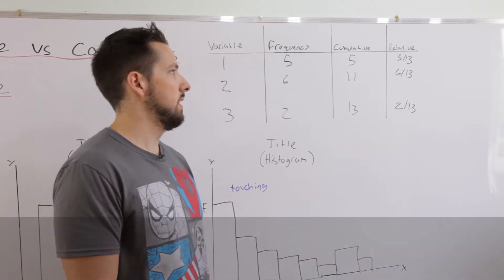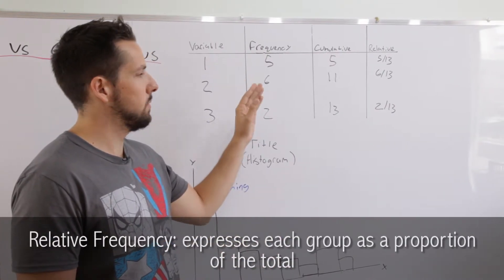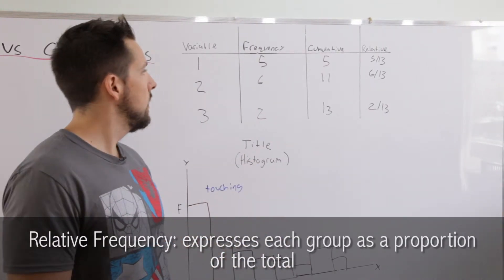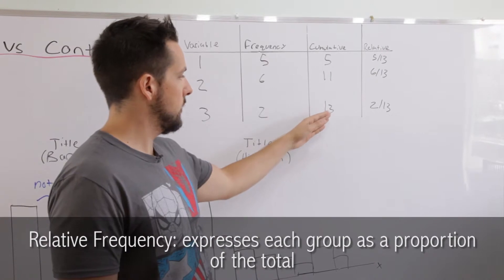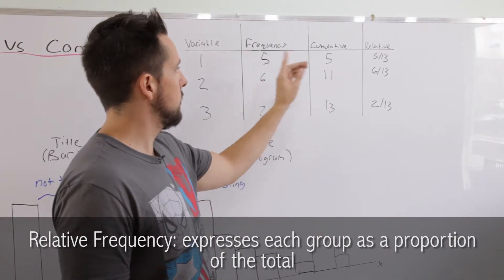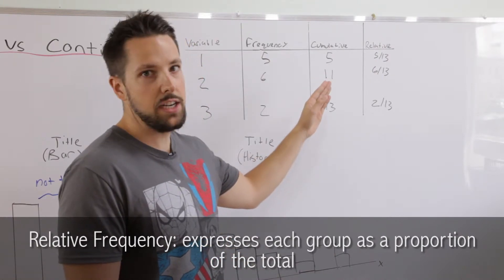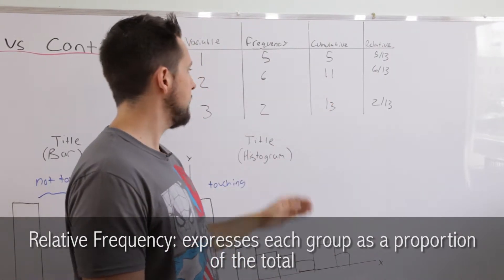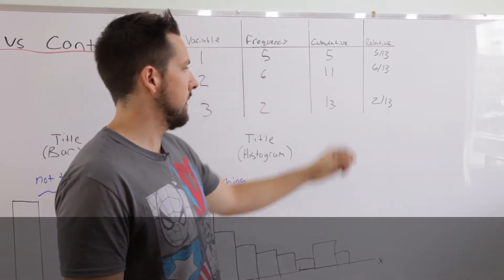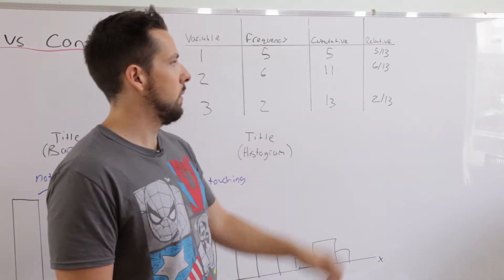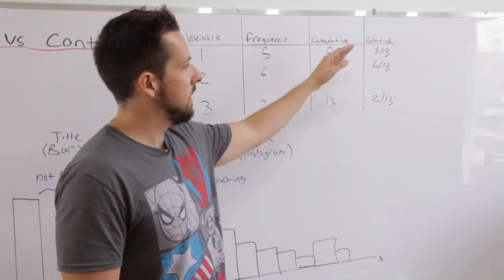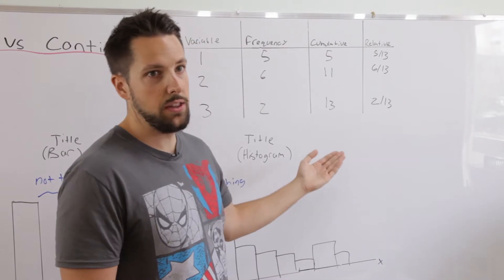Now relative frequency expresses each group as a proportion of the total. So the total is thirteen. In the first group, it has five, so we write five over thirteen. You can leave it as a fraction or you can put it as a decimal. The next group will have six over thirteen, final group two over thirteen. Now if you were to add these all up, it would equal thirteen over thirteen or one.